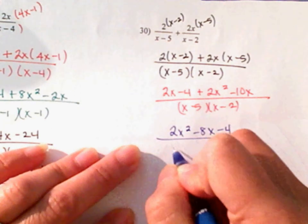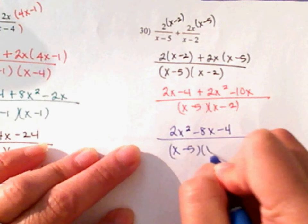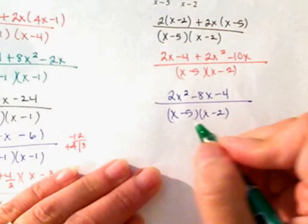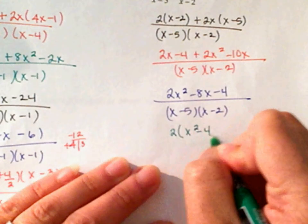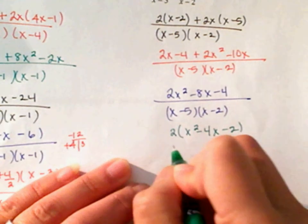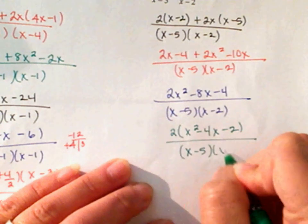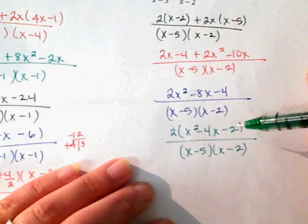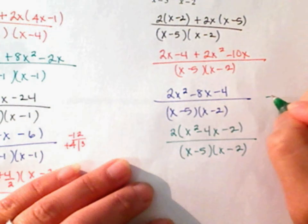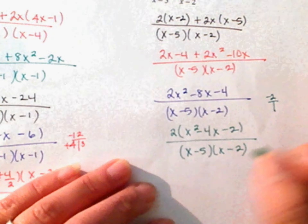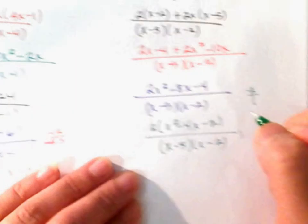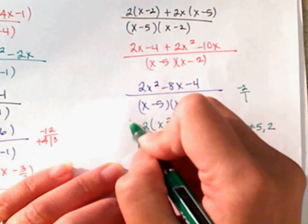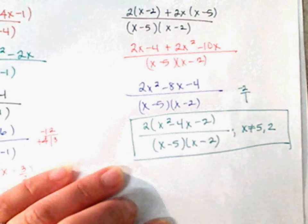All of that over x minus 5 times x minus 2. Factor out your 2, so you've got x squared minus 4x minus 2, all of it over x minus 5 times x minus 2. Do you know any numbers that multiply to give you negative 2 and subtract to give you 4? I don't. So since I can't factor it, this is your final answer. x cannot be 5 nor 2. And there you have number 30.